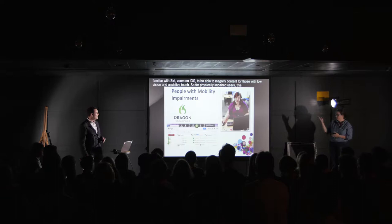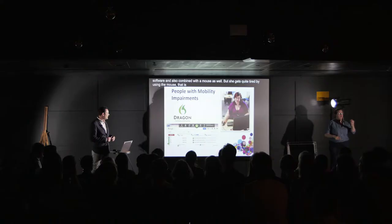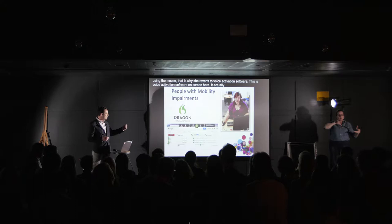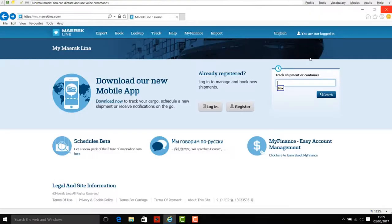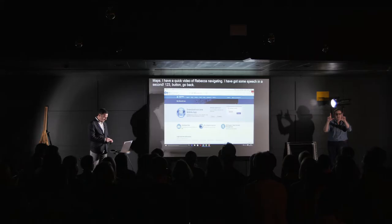This is Bex — Rebecca — one of our senior accessibility analysts. She has a mobility impairment and navigates around the screen using voice activation software combined with the mouse. She gets quite tired using the mouse, which is why she reverts to voice activation software. The software outputs little bubbles on screen, similar to what you see in Google Maps, when you say voice commands. Here's a short video of Bex navigating: 'links, thanks, Chris, box one two three, button, go back, page down.'